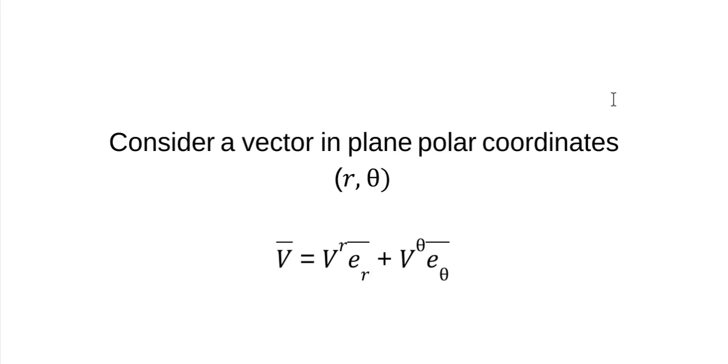The covariant derivative in Cartesian coordinates is just the directional derivative because the basis vectors do not change in the space. They're all unit vectors. They don't change. So you don't have a covariant derivative, it just becomes a directional derivative. So the covariant derivative is the general form of the directional derivative.